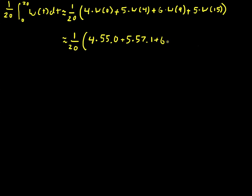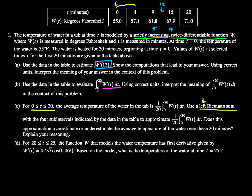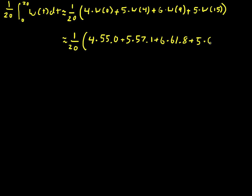Plus 5 multiplied by W of 4 is 57.1, and then I have 61.8. 57.1, plus 6 multiplied by, I looked at W of 9, 61.8, plus 5 multiplied by W of 15, 67.9.